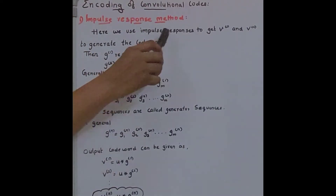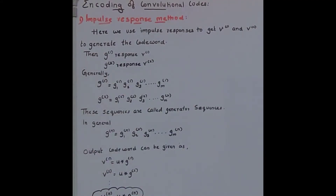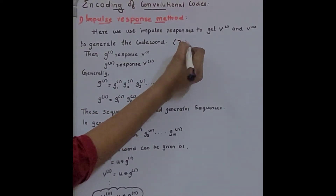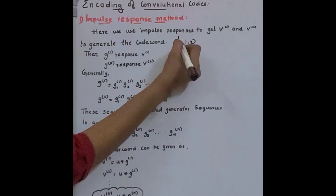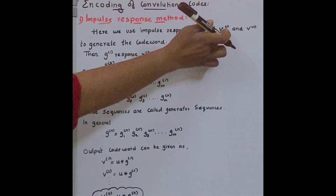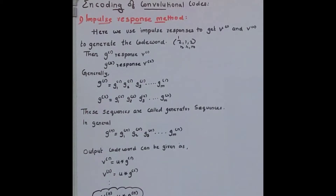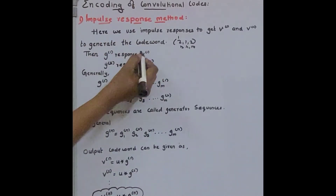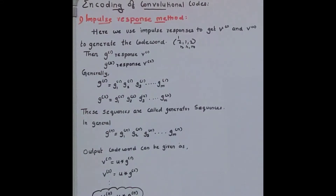Here we use impulse responses to get V1 and V2 to generate the code word. V1 means the output of the first terminal and V2 means the output of the second terminal for a 2-1-2 convolutional encoder. We have two outputs and one input with two shift registers. The combination of V1 and V2 gives us the code word. From the G1 response we get V1, and from the G2 response we get V2.